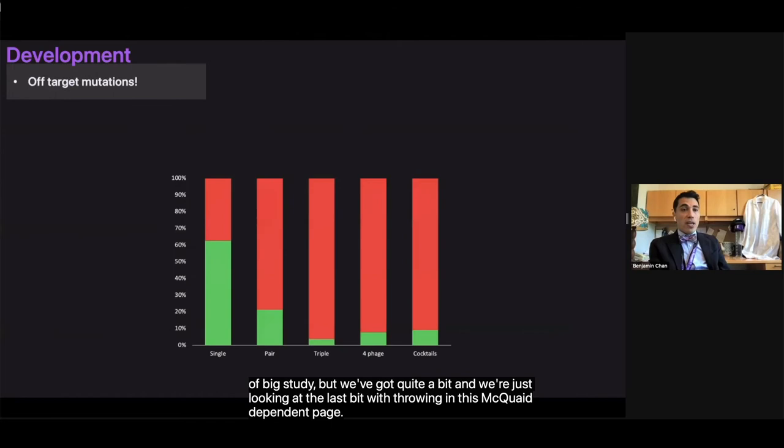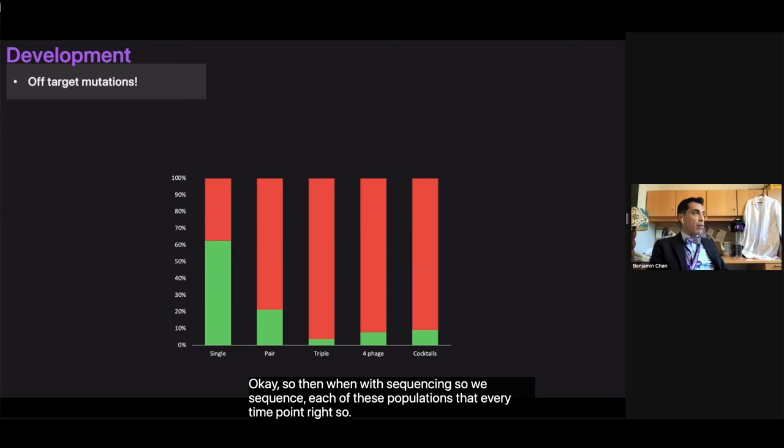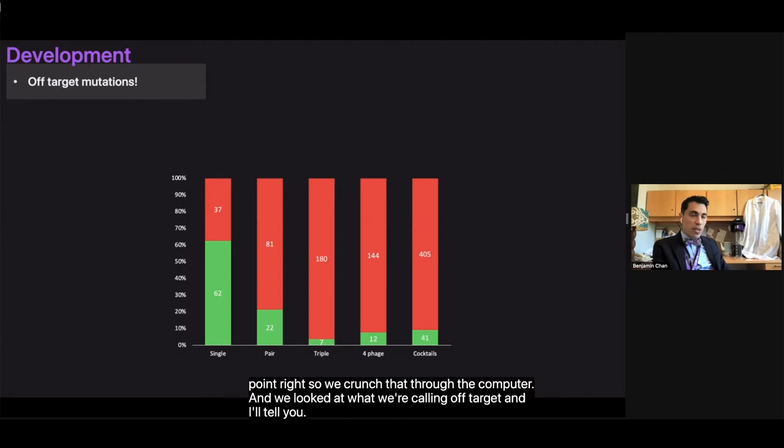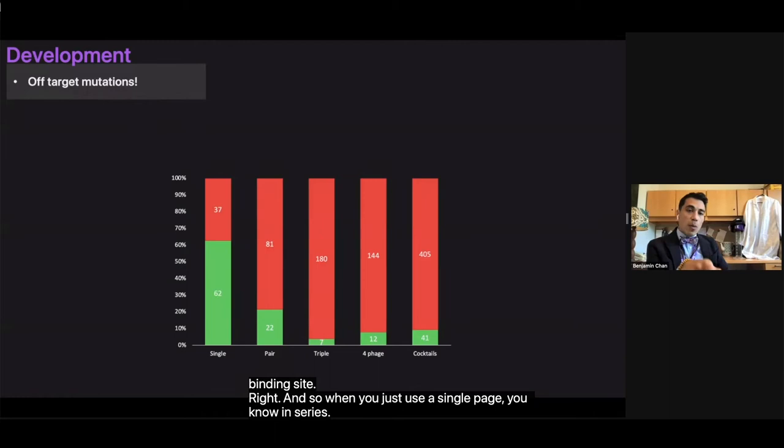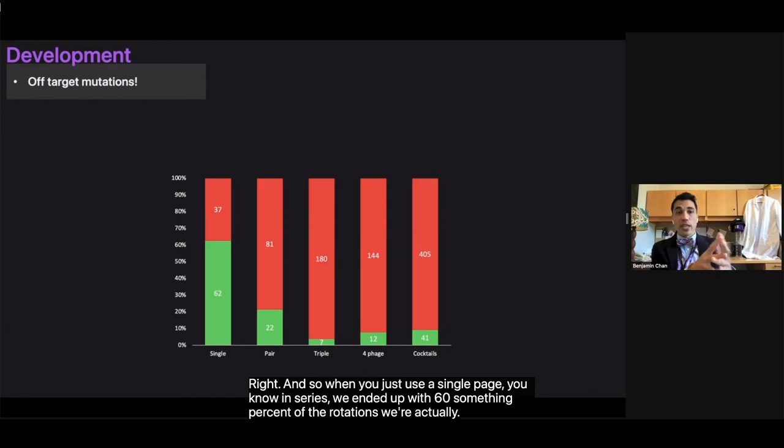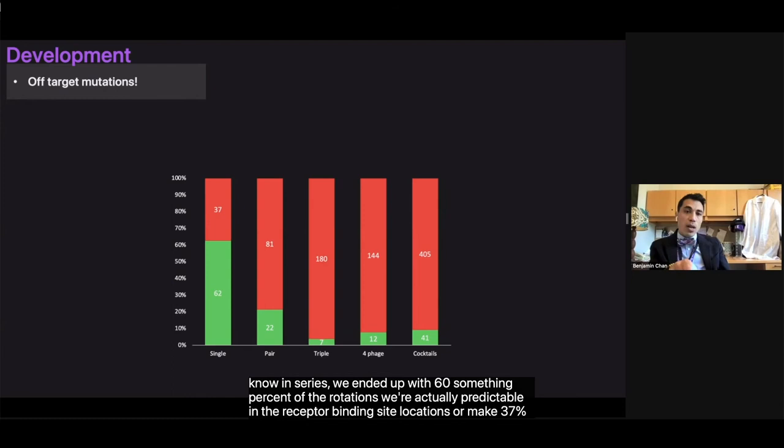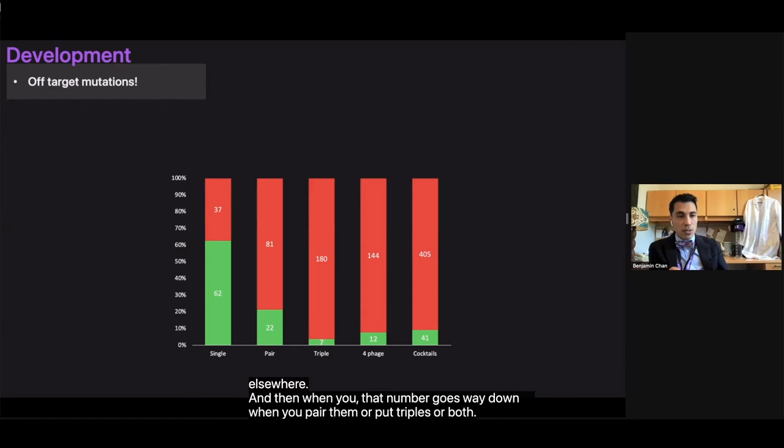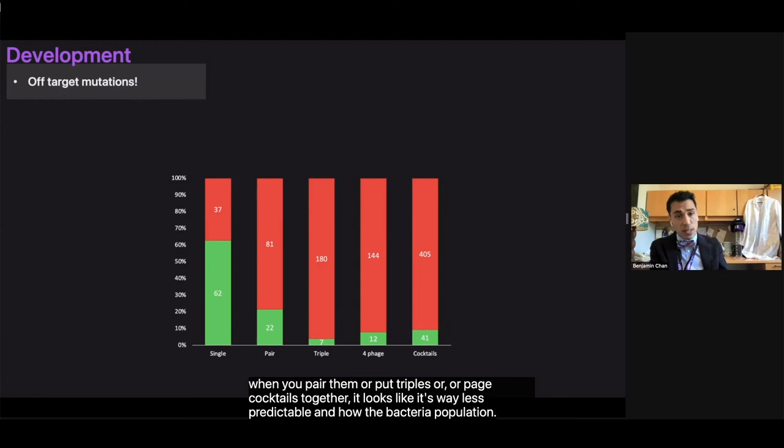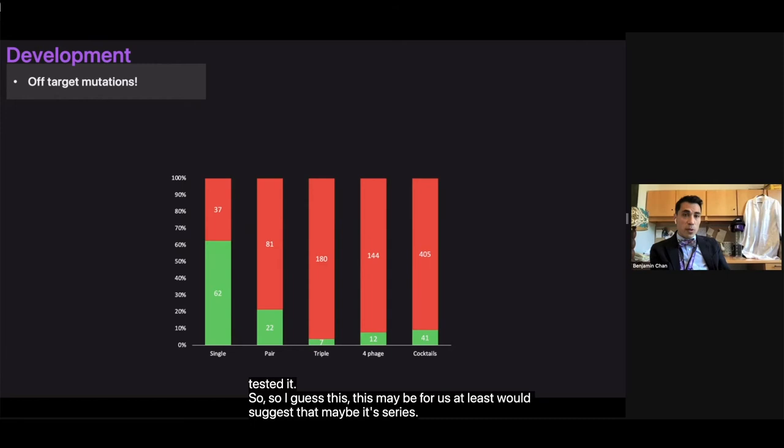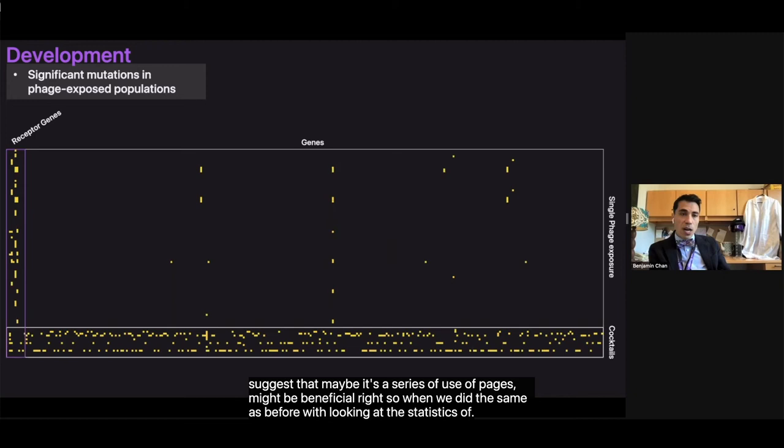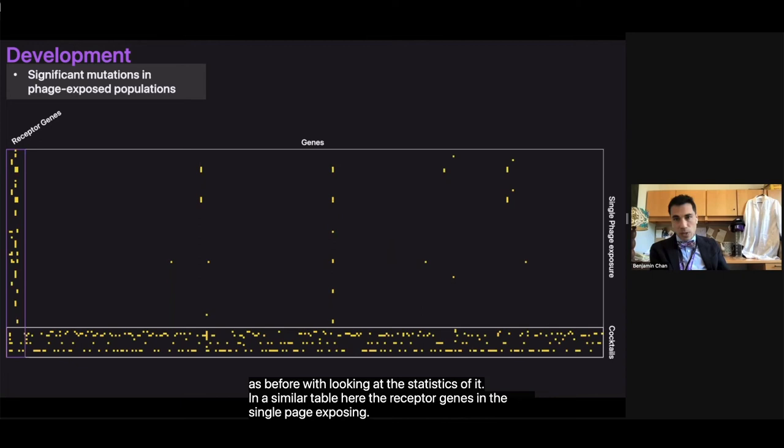So when we looked at sequencing, we looked at what we're calling off target and on target mutations, where on target mutation would be the mutations associated with the receptor binding site. When you just use a single phage in series, we ended up with 60-something percent of the mutations were actually predictable in the receptor binding site locations. And then when you pair them or put triples or phage cocktails together, it looks like it's way less predictable in how the bacteria population responds, at least in the system, in the way that we tested it. So this may be for us would suggest that maybe a series of use of phages might be beneficial.